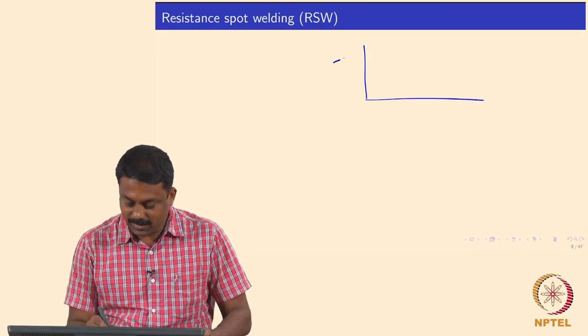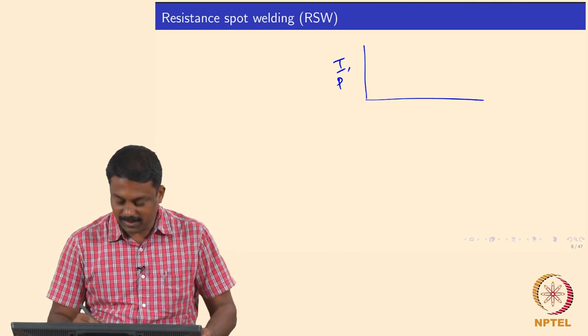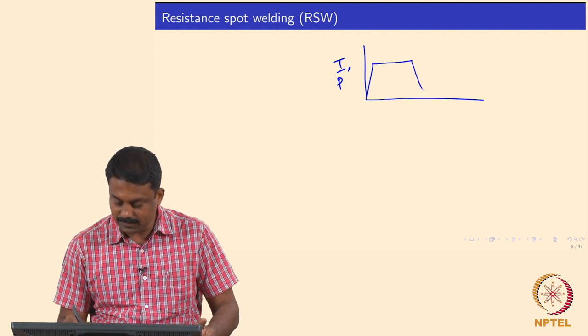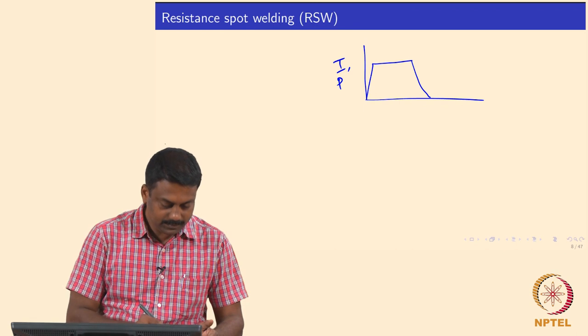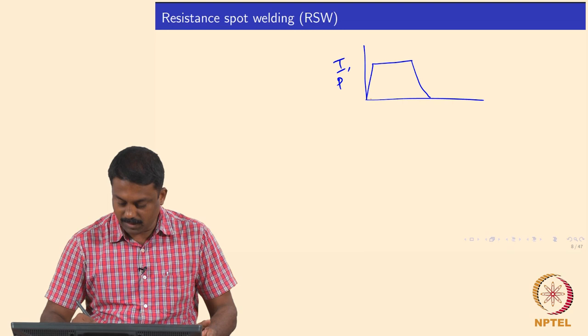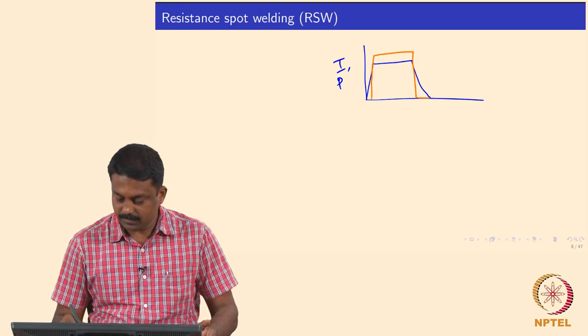We will start from last class where we looked at the typical resistance spot welding thermal cycle. We looked at a simple thermal cycle - the current or load, it is important to keep the two faying interfaces together. A cycle looks like: we start with loading first, and the moment we achieve a required load, the current will also start forming.